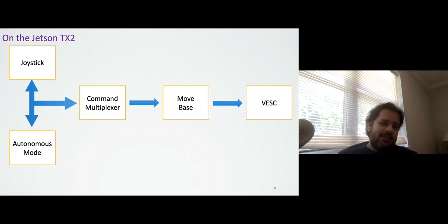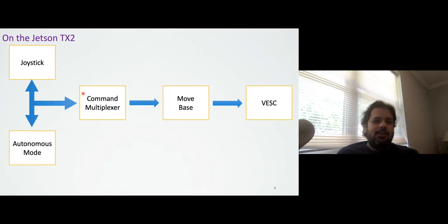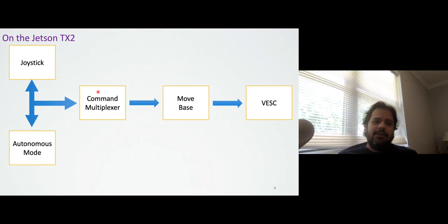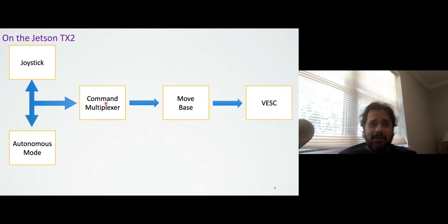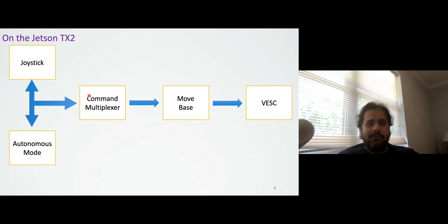If you recall the real F1/10 car, the idea was that there's a command multiplexer — a software switch between whether you are operating in teleop mode versus autonomous mode. The car could accept commands from both the Logitech joystick or from the onboard Jetson TX2. In the simulator, there is no physical speed controller — it's simulation in Gazebo — but everything else is pretty much the same. You will still have a command multiplexer that you enable or disable using parameters.